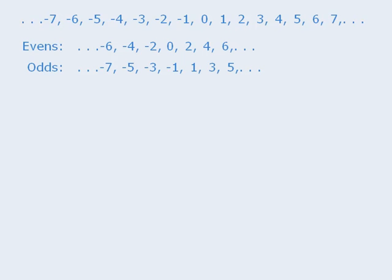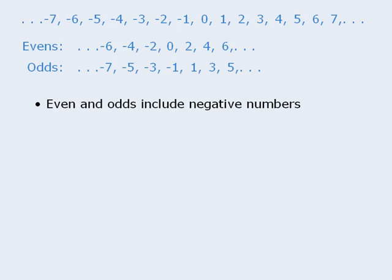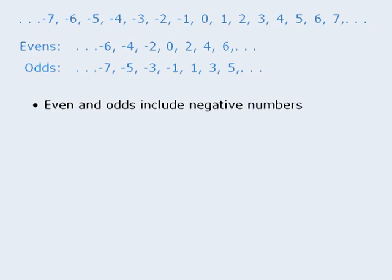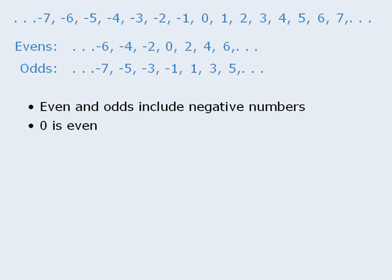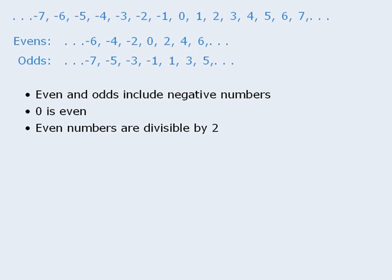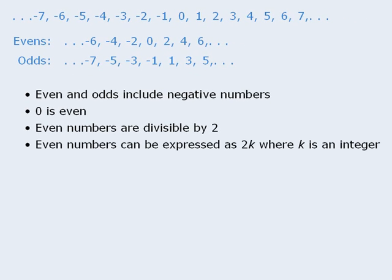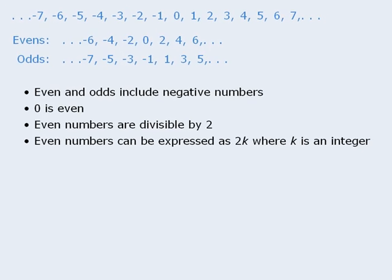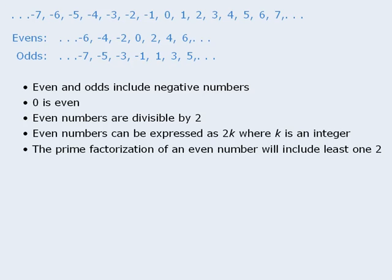Some important facts to remember about even and odd numbers are as follows. First, even and odd numbers include negative values, so for example negative 17 is considered an odd number. Next, 0 is an even number, and you will see some questions that test this fact. Also, even numbers are divisible by 2, which means that all even numbers can be expressed as 2k, where k is an integer.